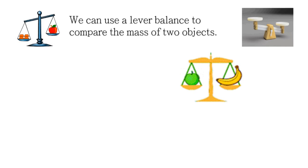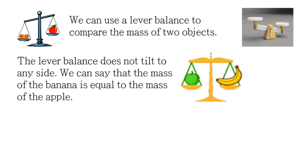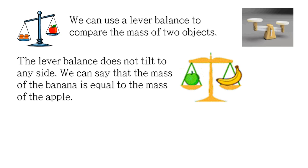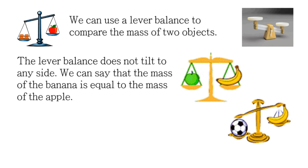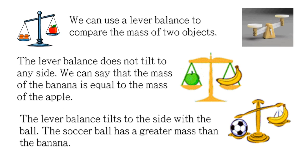We can use a lever balance to compare the mass of two objects. For example, with an apple and a banana, if the lever balance does not tilt to any side, the mass of the banana is equal to the mass of the apple. In another illustration with a ball and a banana, the lever balance tilts to the side with the ball, so the soccer ball has a greater mass — it is heavier — than the banana.